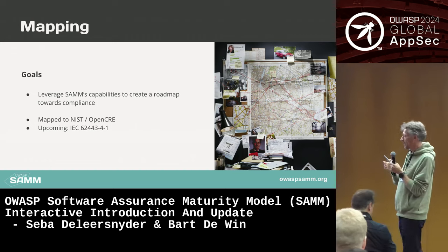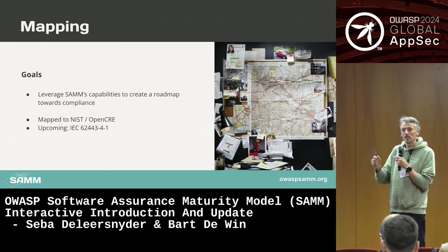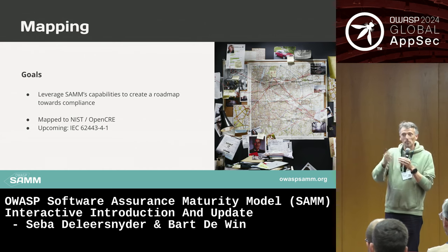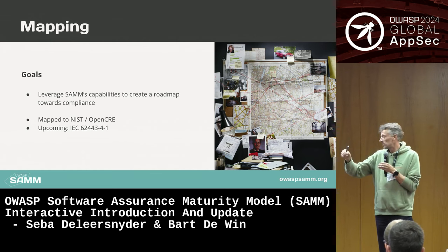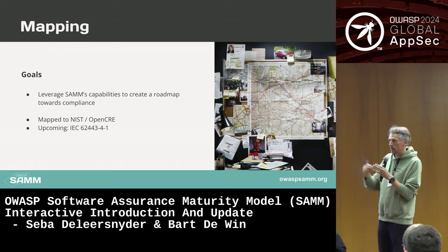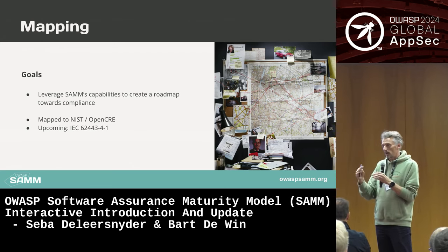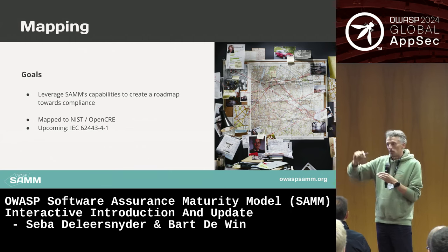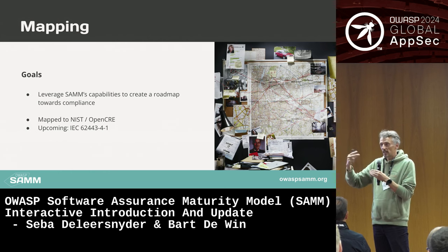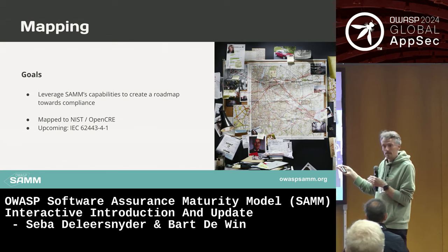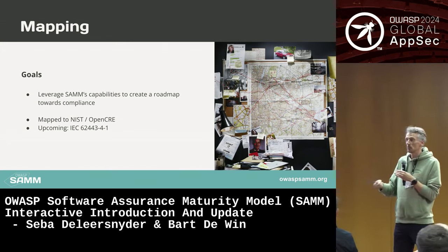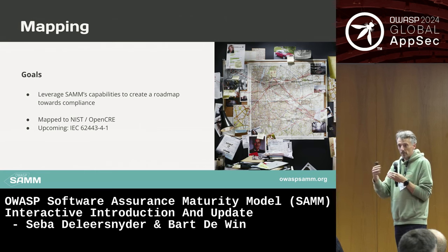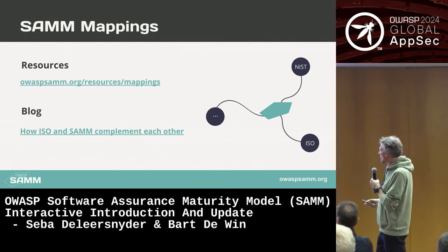What we've done is create a mapping between SAMM and OpenCRE, so if you're using SAMM in your organization and have to implement regulation XYZ, you can use the mapping from SAMM towards OpenCRE and find out: for example, if you're using SAMM and this is the activities you're doing, you're covering already 80% of the CRA (Cyber Resilience Act) standard in the EU, but there's maybe 20% you're missing. That's the kind of information you can find out — it's really the reason why we have these mappings and are spending considerable effort on them.